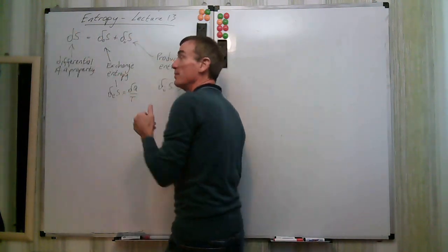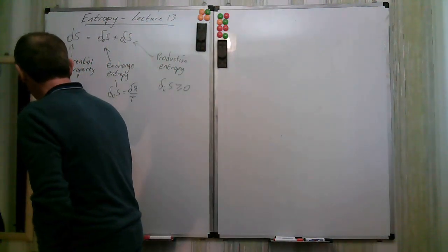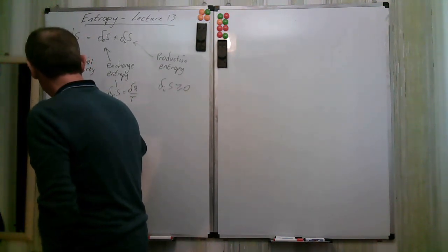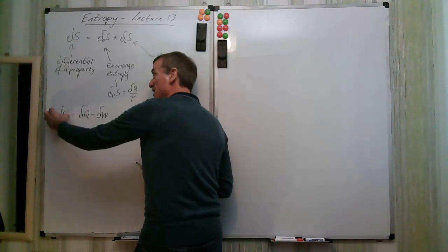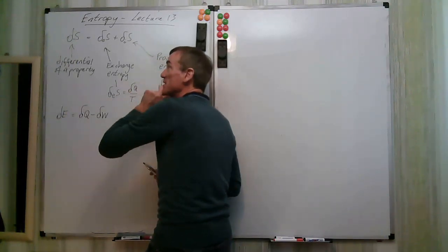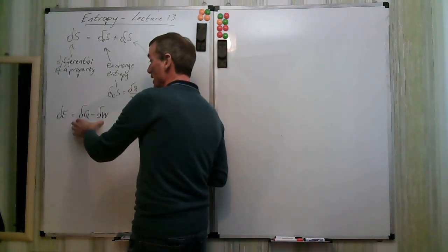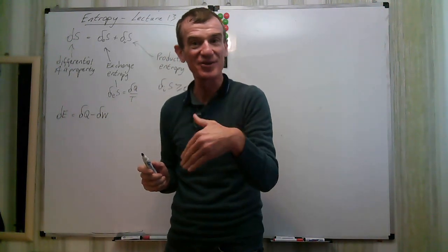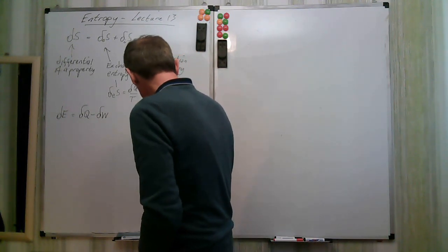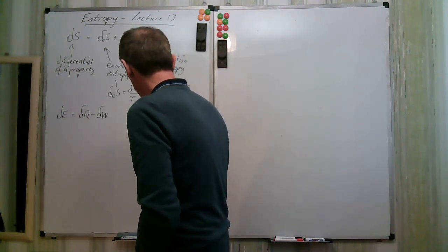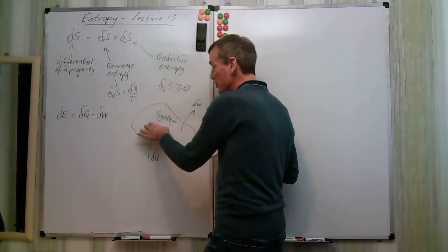This entropy equation can be compared to our energy equation: dE equals delta_q minus delta_w. On the left-hand side we have our changing properties, and on the right-hand side we have transfers — different forms of energy transfer between the system and the surroundings.